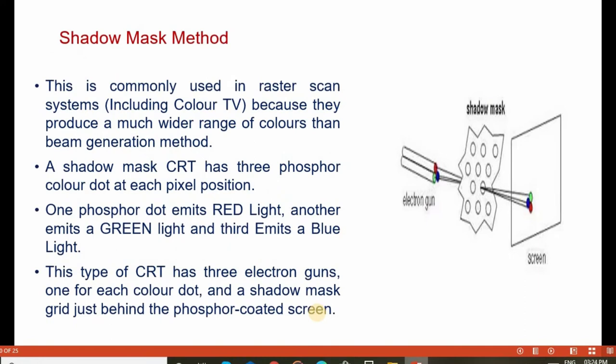Now we will discuss the shadow mask method. This is a common method used in raster scan systems, because it produces a much wider range of colors than the beam penetration method. The image shows an electron gun, screen, and shadow mask. The shadow mask is placed in between the electron gun and the screen.